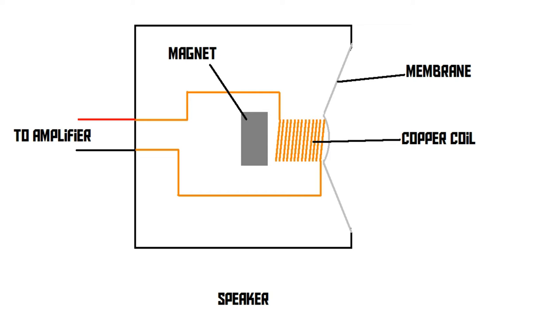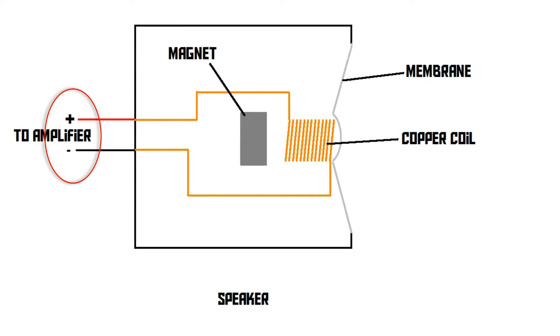However, the magnet is fixed in the enclosure of the speaker. It cannot move. But the coil is connected to a soft membrane, so it can move. So that means the coil is going to get pushed forward. Now, that's it. And when we turn off the power again, it's going to move into its old position.